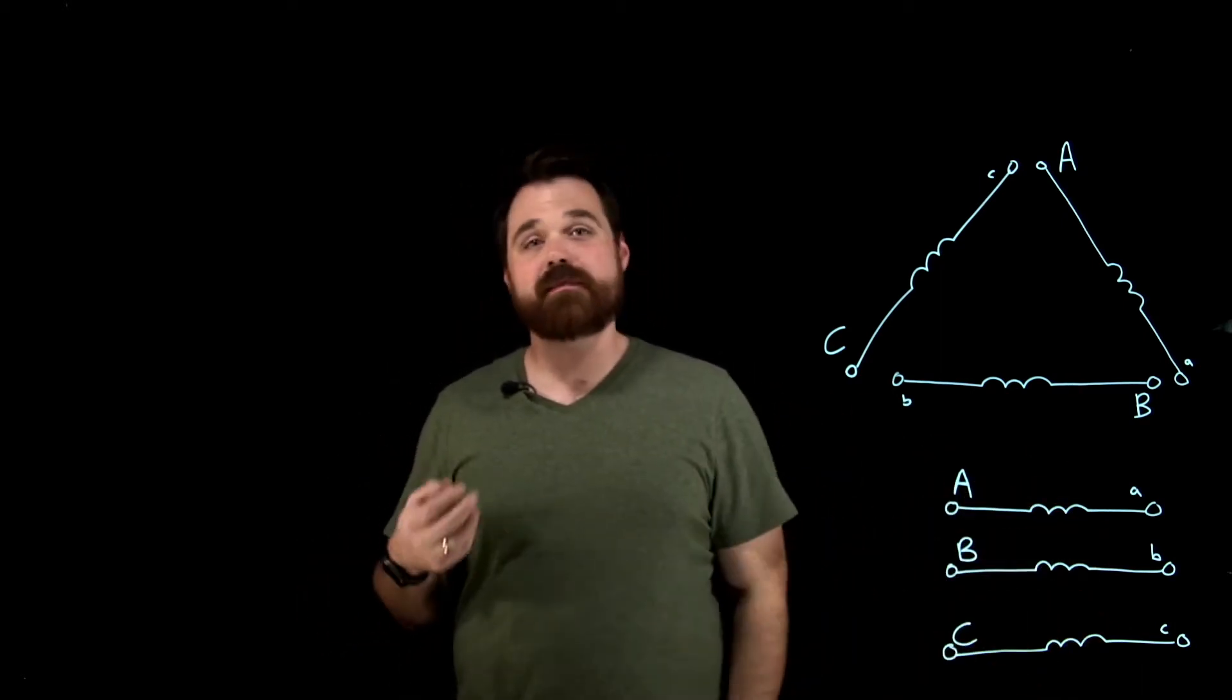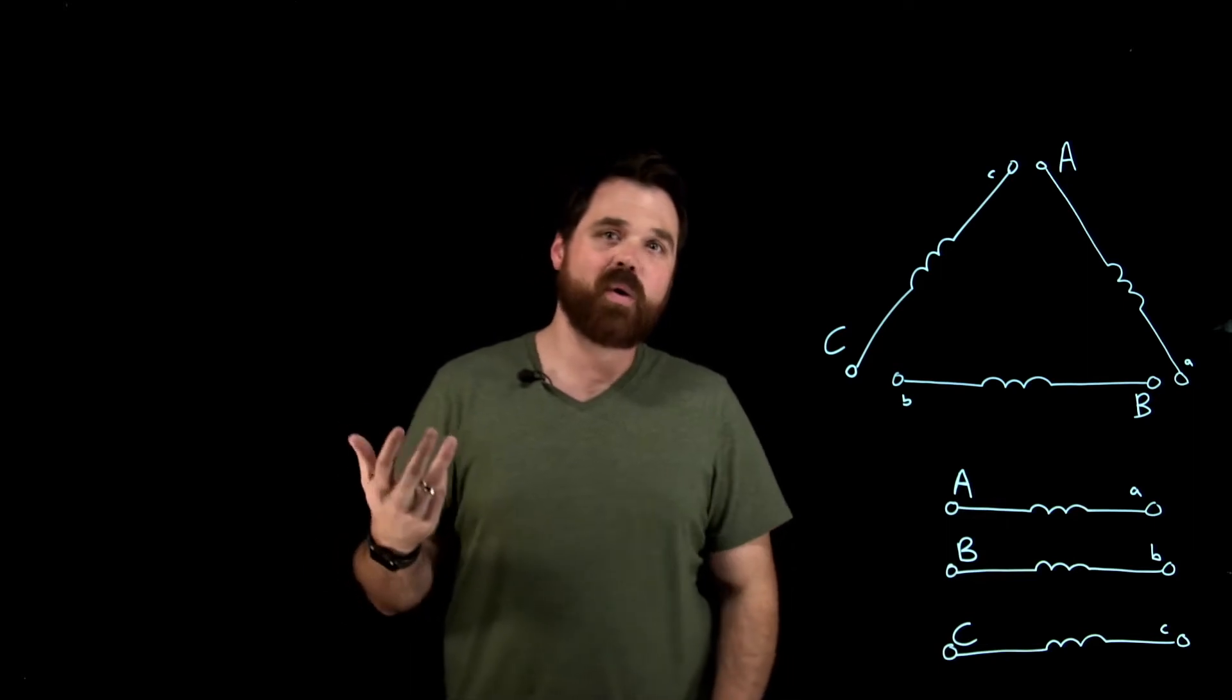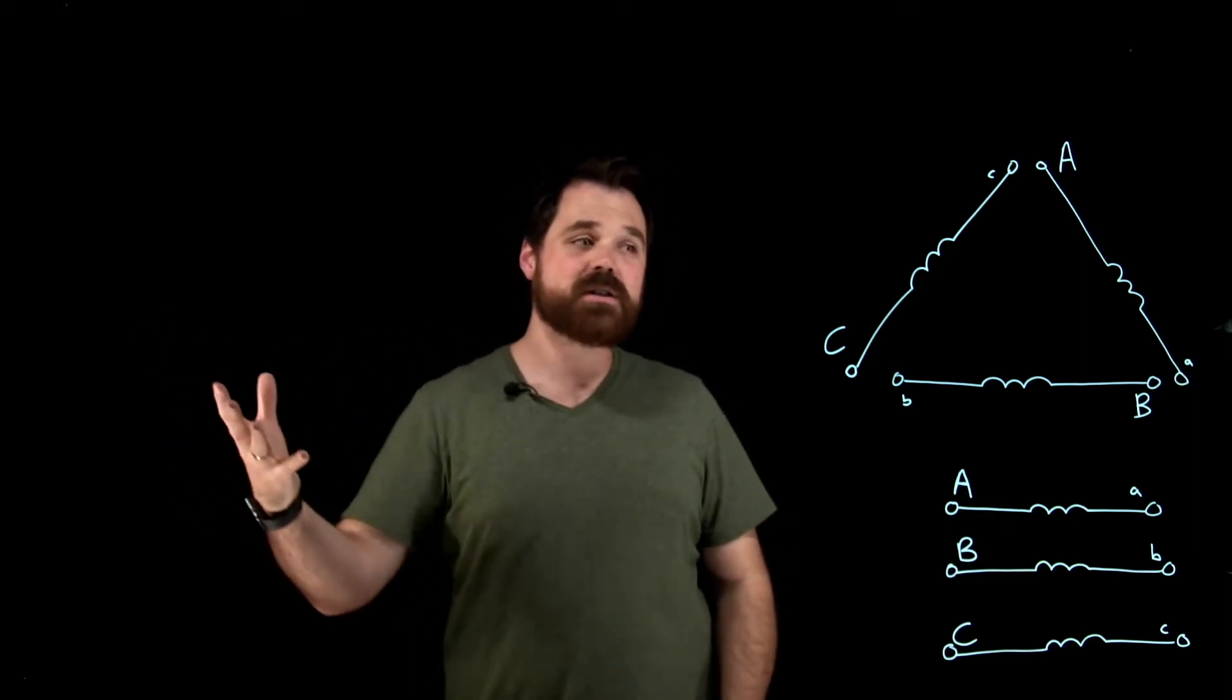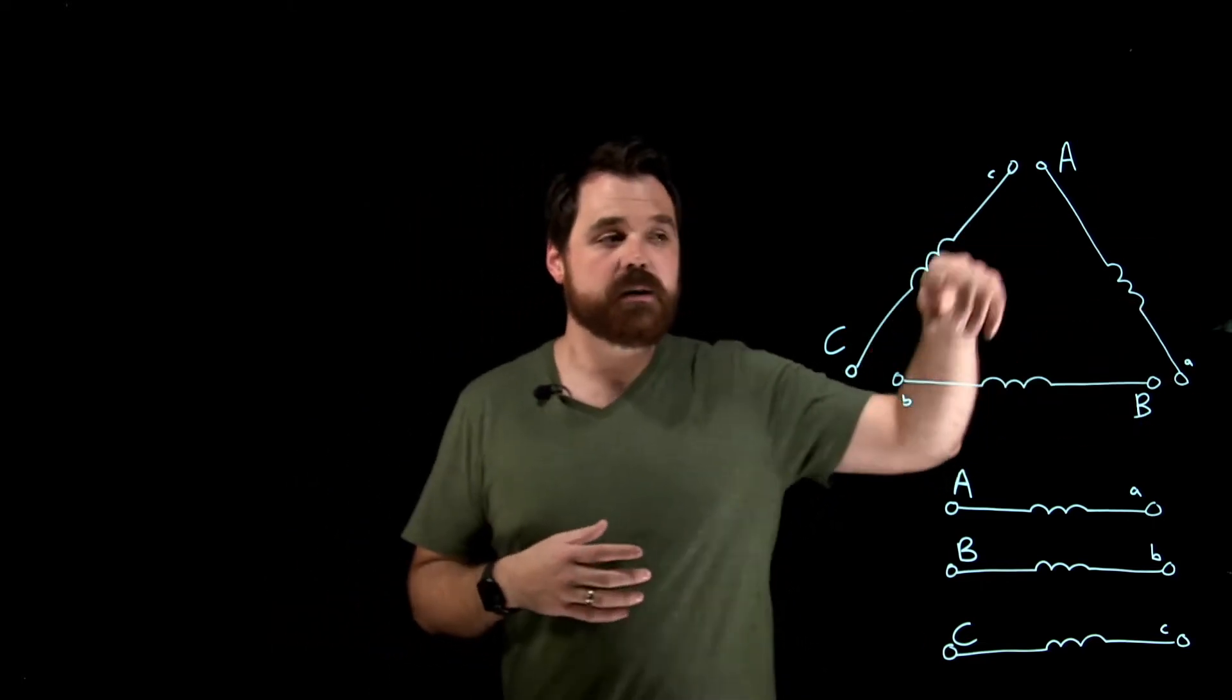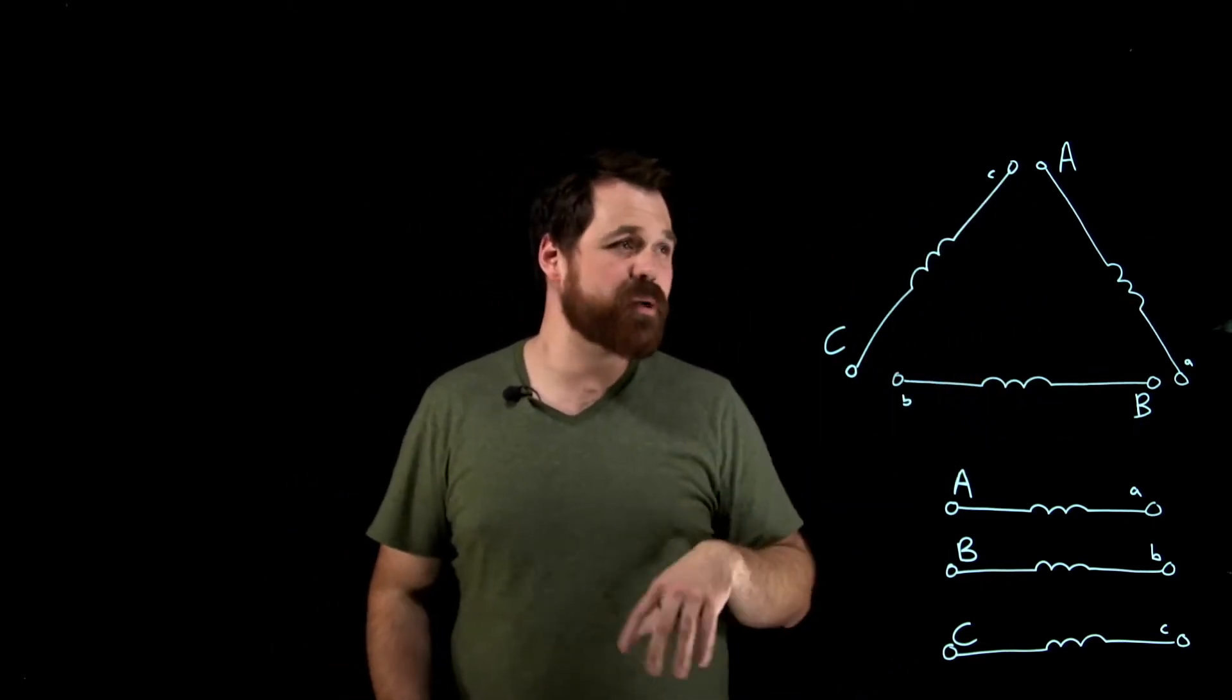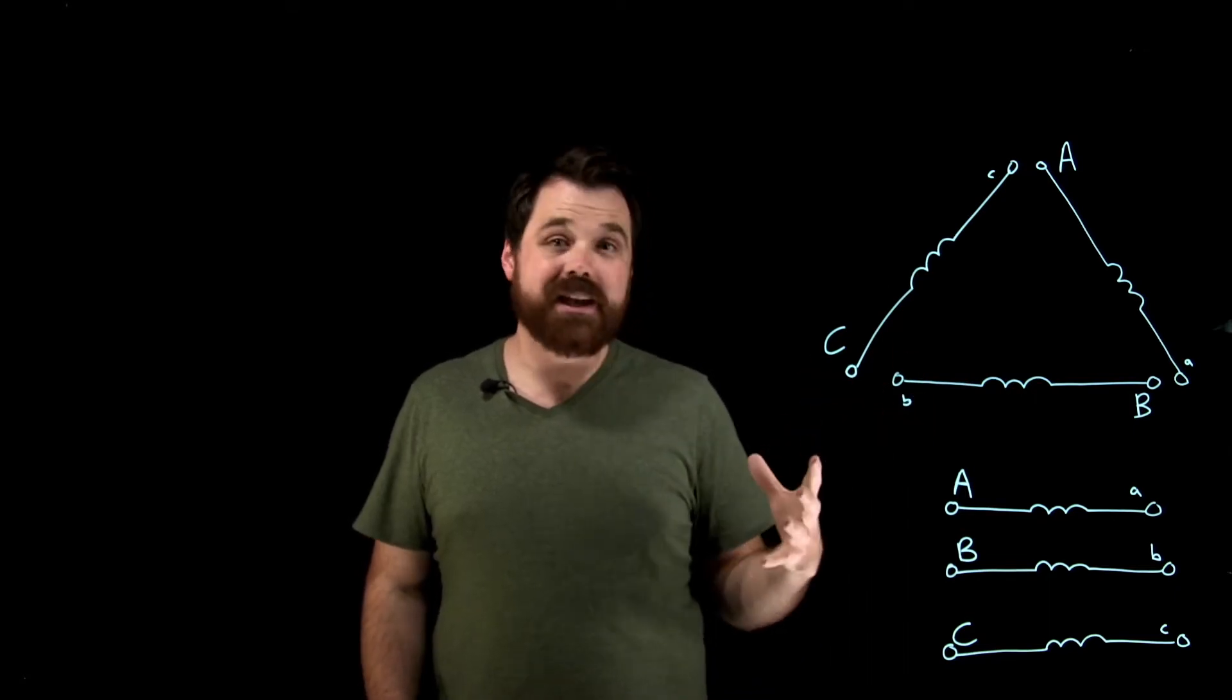We take three of our windings from a three-phase transformer or from three single-phase transformers, and we connect them up into that delta shape like this, which puts them 120 electrical degrees apart, and we connect them like this.